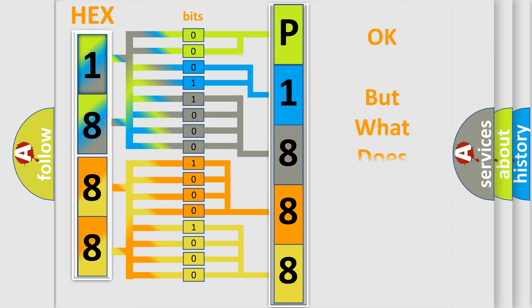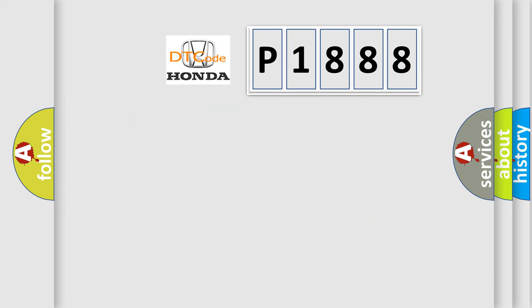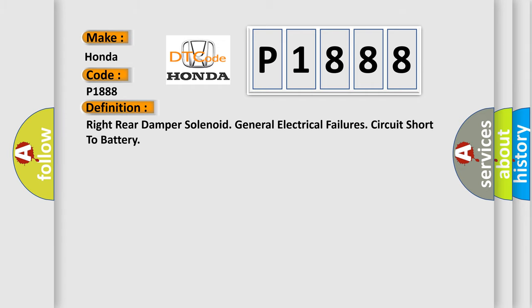The number itself does not make sense to us if we cannot assign information about what it actually expresses. So, what does the diagnostic trouble code P1888 interpret specifically for Honda car manufacturers? The basic definition is: Right rear damper solenoid general electrical failures circuit short to battery.